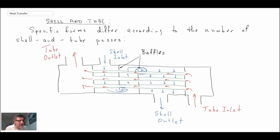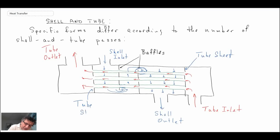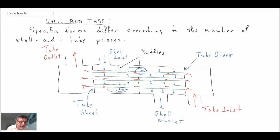Different baffle designs can be used to enhance mixing. The construction also includes a tube sheet on each side — that is where the tubes come through and are usually welded. The baffles are typically not welded; they are free to move. You want baffles to minimize flow-induced vibration and to force the shell-side flow around the tube bundle multiple times.